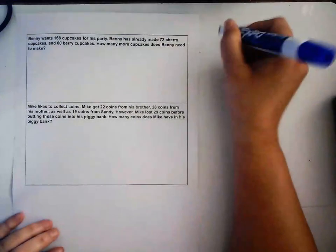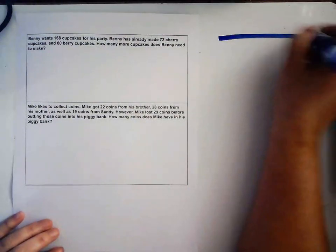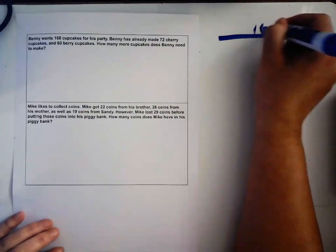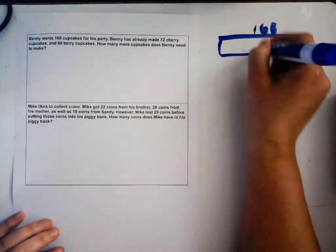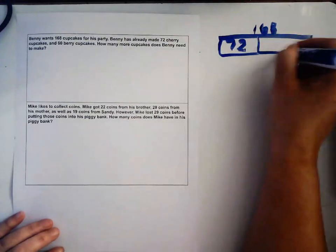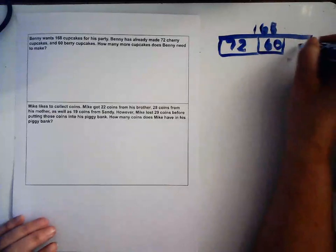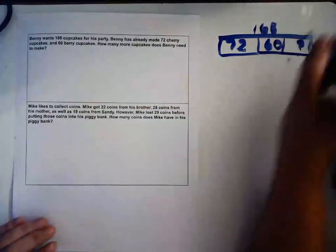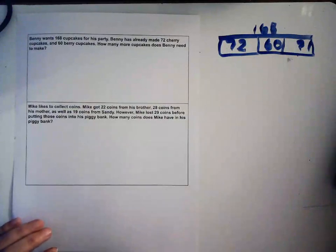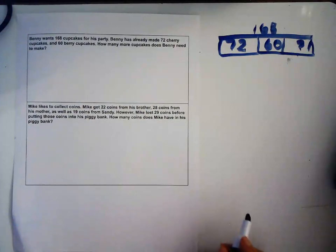This is a two-step word problem. First I read the problem, then I read the question: how many more cupcakes does Benny need to make? He's done some, we just need to figure out how many more he needs. He has to have a total of 168. He made 72, then he made 60 cupcakes. We're still wanting how many more does he need to get to 168?